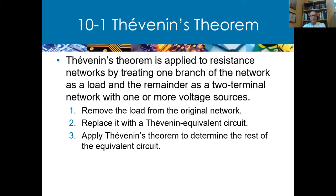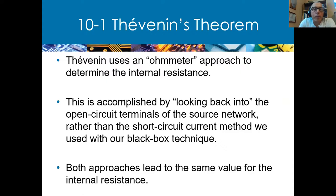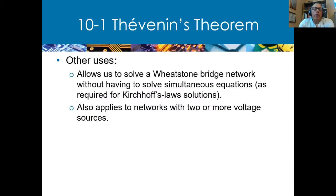That's Ohm's law basically, so there are two ways to do it. The way we did this morning by shorting out the power supply is called the ohmmeter approach — looking back into the circuit from the terminals, not from the power supply. We can use this when we discuss Wheatstone bridges later in this chapter, to come up with an equivalent circuit for a Wheatstone bridge.